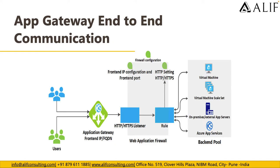This is how your end-to-end communication looks. Application Gateway has a frontend IP and an FQDN associated with it. Then you have an HTTP or HTTPS listener, where you define which URL or DNS requests Application Gateway will accept. It has a rule associated with the HTTP settings and the backend pool, through which the request is redirected to backend servers. Application Gateway supports a wide range of backend pools, including VM scale sets, VMs, external IPs, or Azure App Services.